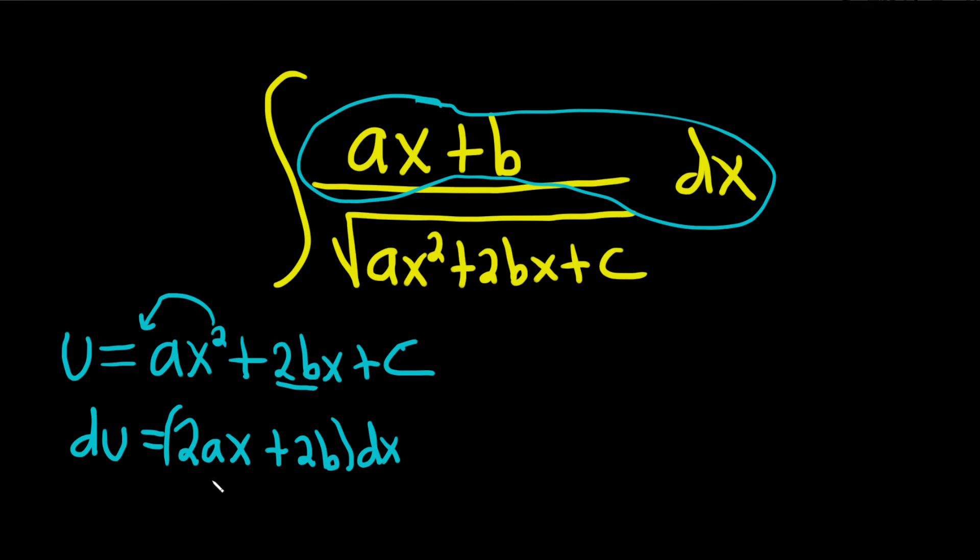So it looks like we're almost there. We can pull out a 2 and I think we'll be there. Let's see. So 2 parentheses. Yeah, look at that. Ax plus b dx. You can pull out the 2 and everything looks good.